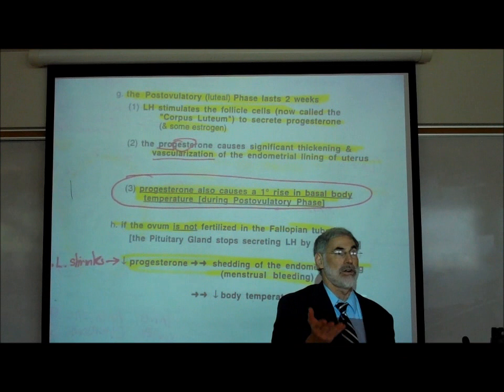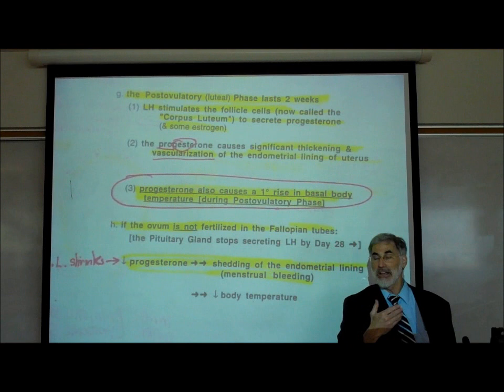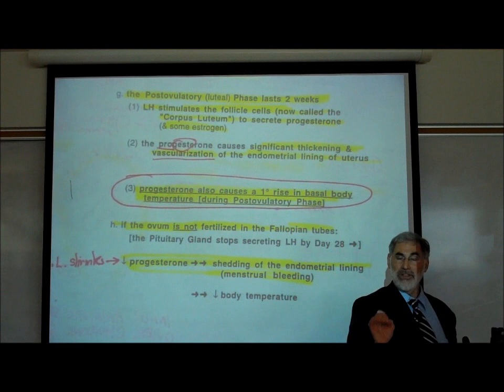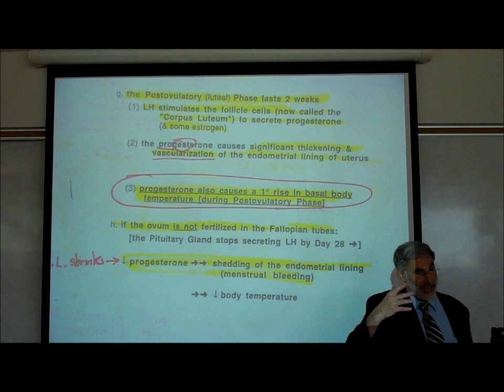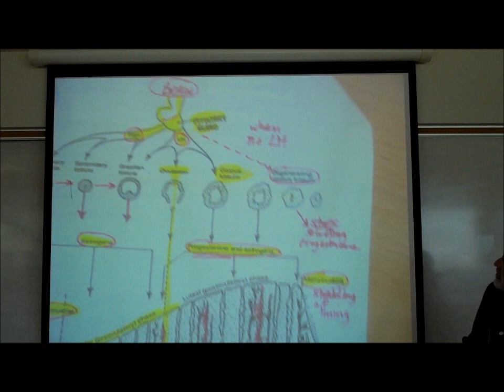This temperature-based rhythm method was used before modern home ovulation test kits — it's the method the Catholic Church advocated for controlling when you get pregnant. It's still used today. The ovulation test kit is more accurate than taking temperature every morning, but it's expensive. A thermometer is inexpensive, so couples with financial constraints may prefer the rhythm method.